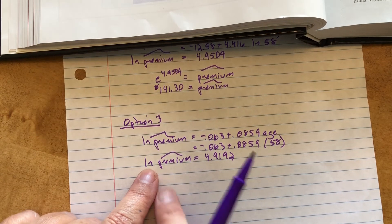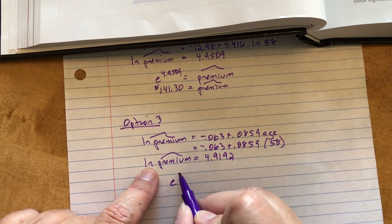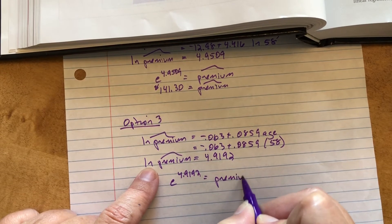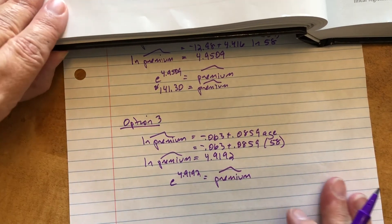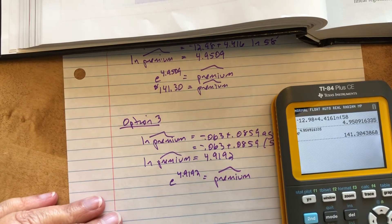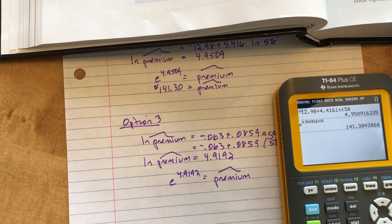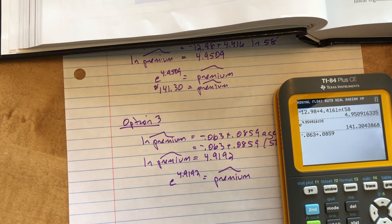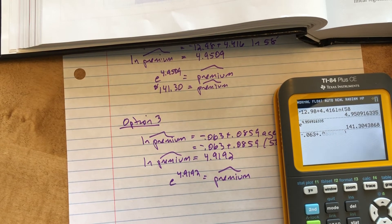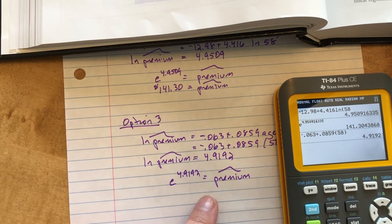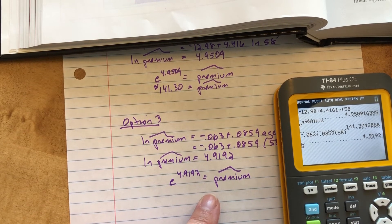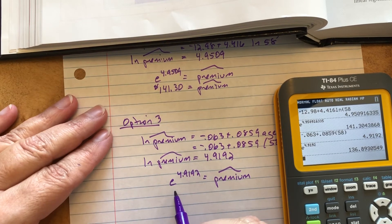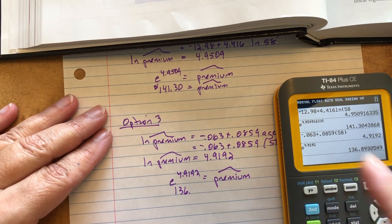So E to the 4.9192 equals the predicted premium. I'm going to throw this in the calculator so I get it exact. And I get negative 0.063 plus 0.0859 times 58. It was exact. I didn't think it was a terminal decimal. So E, we'll grab that. And now that premium is $136.89.